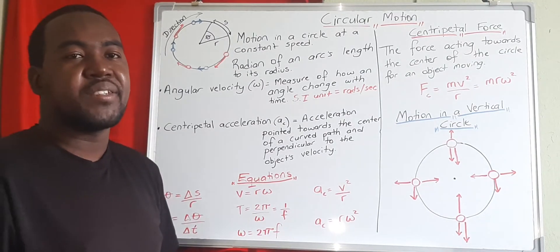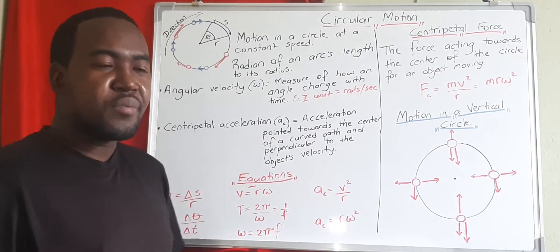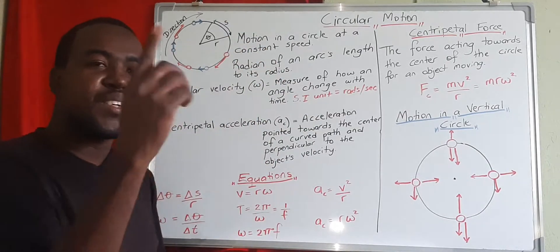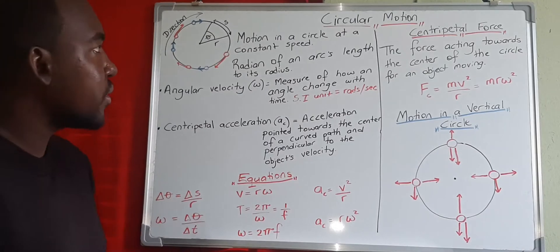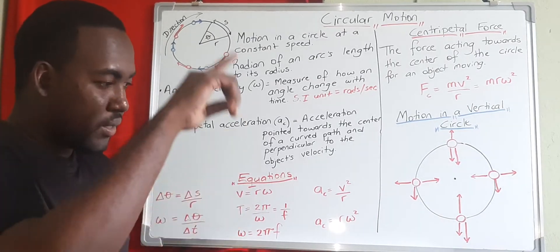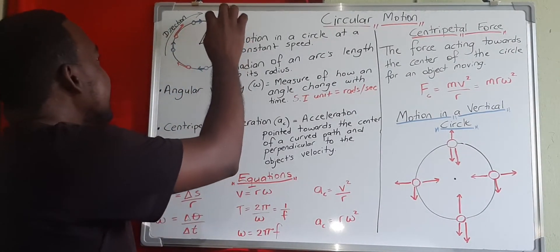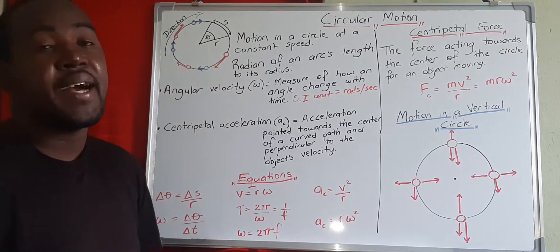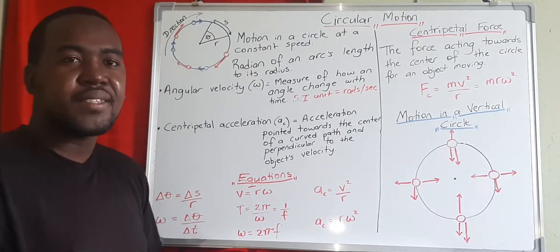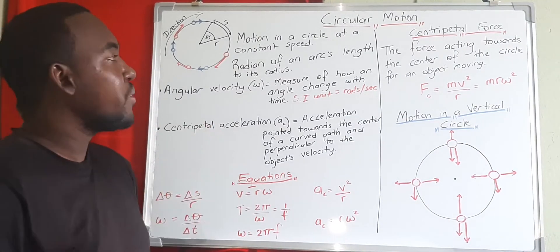Welcome to another lesson. Today we're looking at circular motion. We've been through straight line motion and free fall, so now let's take it further to objects moving in a circle. An object moving in a circle moves at a constant speed — every point on that circle has the same speed. You might be wondering how an object with the same speed can have an acceleration, so let's keep that in mind.